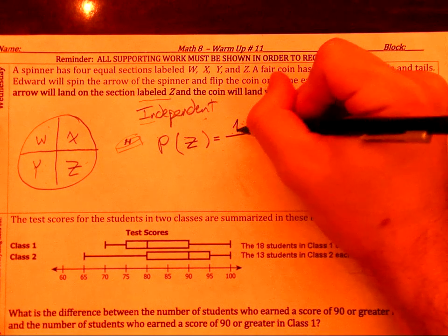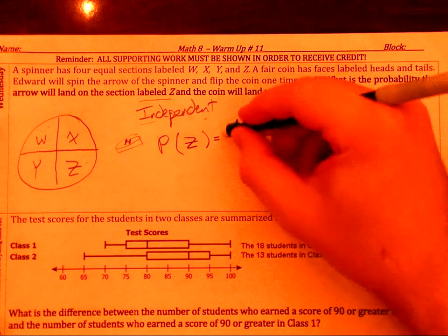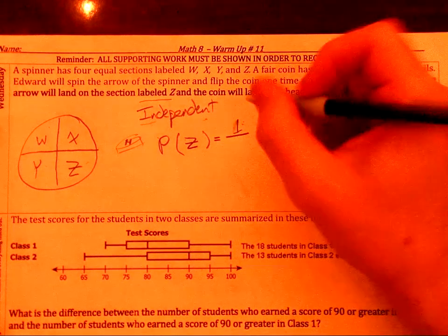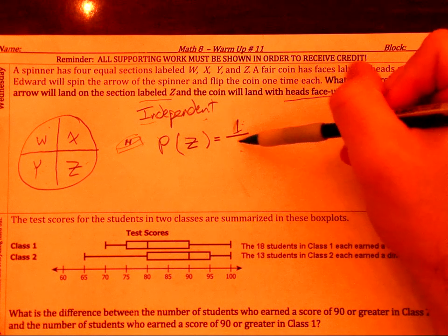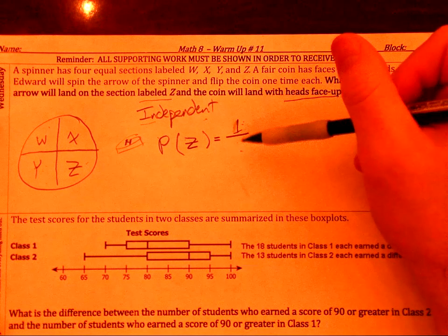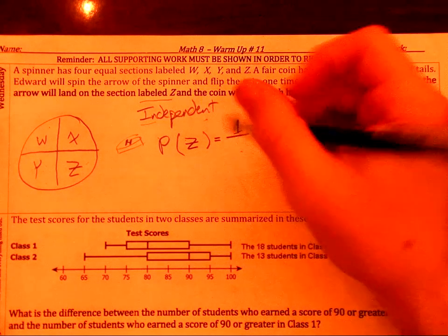And make sure that's a one. And so now we say it's over the total count of sections. So how many sections are there? Well, there are four. So it's one-fourth.